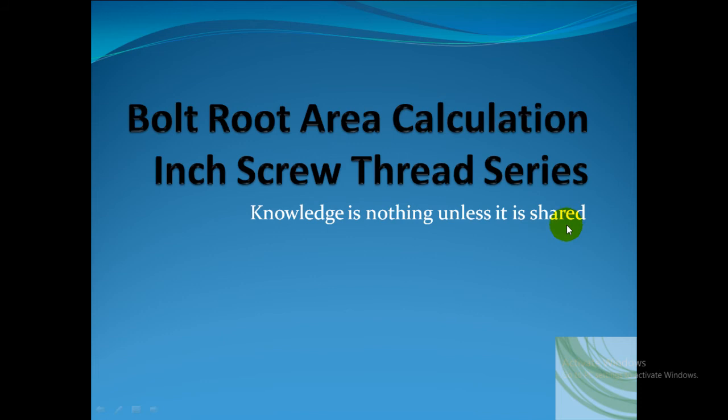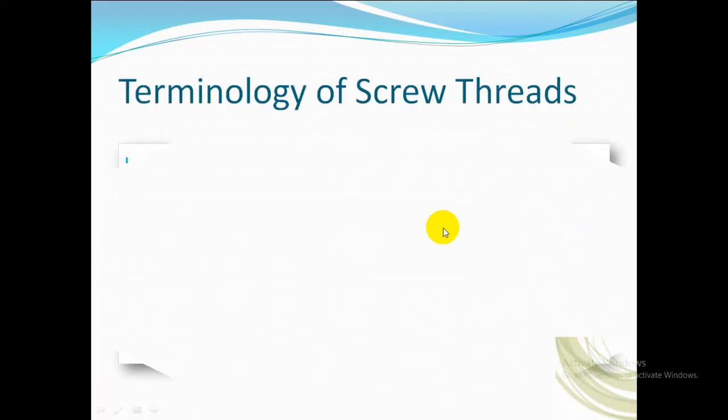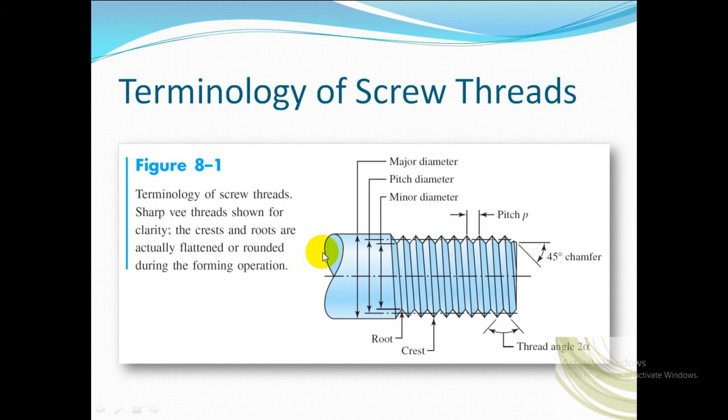Let us see the terminology of screw threads before entering into the bolt area calculation. We want to see some of the definitions and details about the screw threads. From this figure you can note the major diameter, minor diameter, and pitch diameter, and these are the crest and the root. The distance between two crests is the pitch. Sharp width threads are shown for clarity. The crest and roots are actually flattened or rounded during the forming operation. As per ASME B1.1 unified screw threads, the thread angle is 60 degrees.